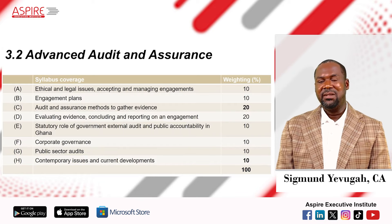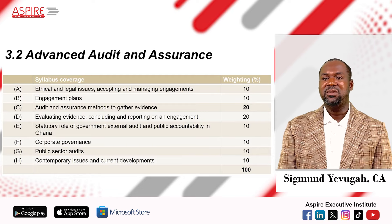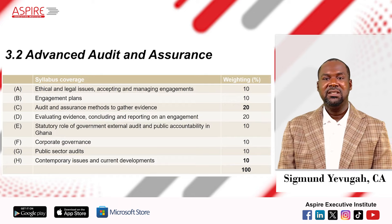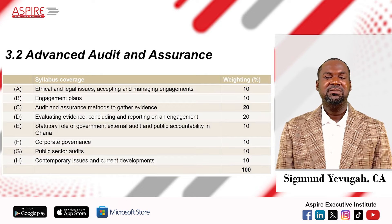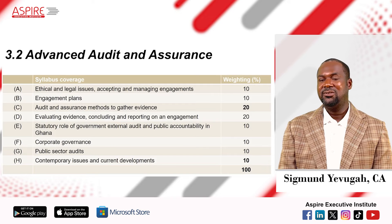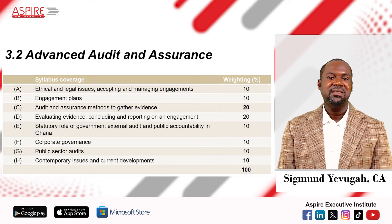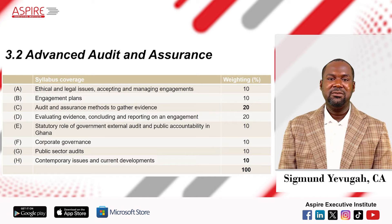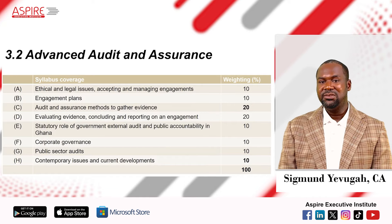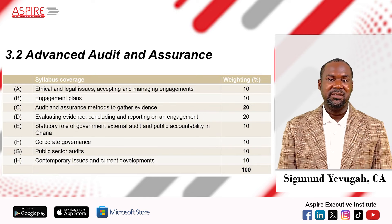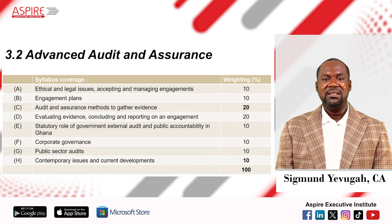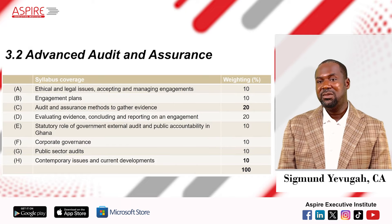Audit and assurance methods of gathering evidence — that is, recommending procedures and being able to deduce evidence from scenarios — is weighted at a maximum of 20 marks, which is very significant. Also included is how to evaluate evidence and reach conclusions, mostly the issues of review, as well as being able to prepare your audit report. We also have the need to appreciate issues of the public sector.